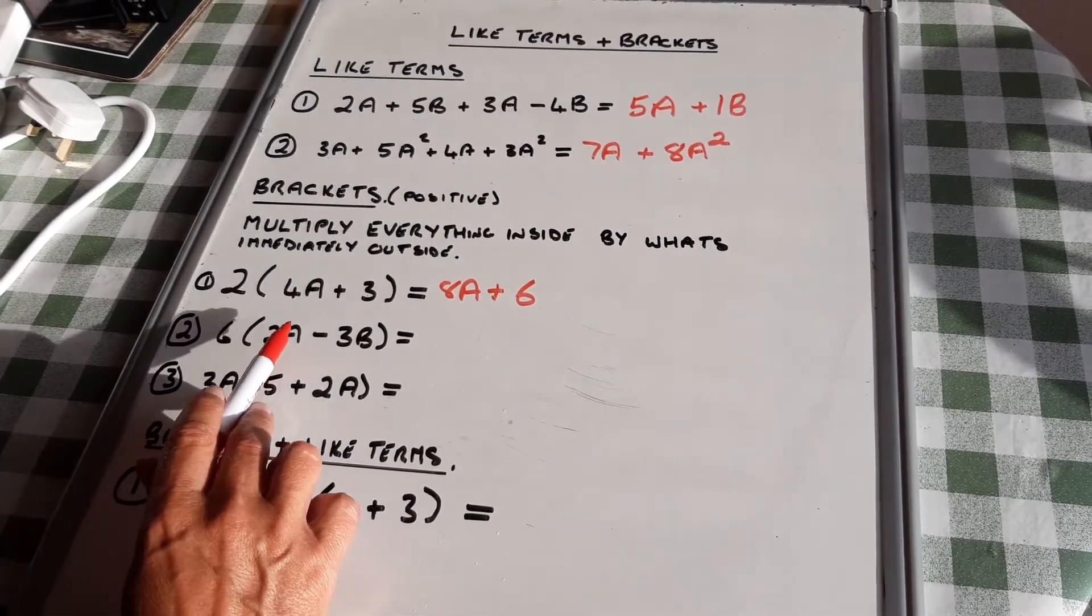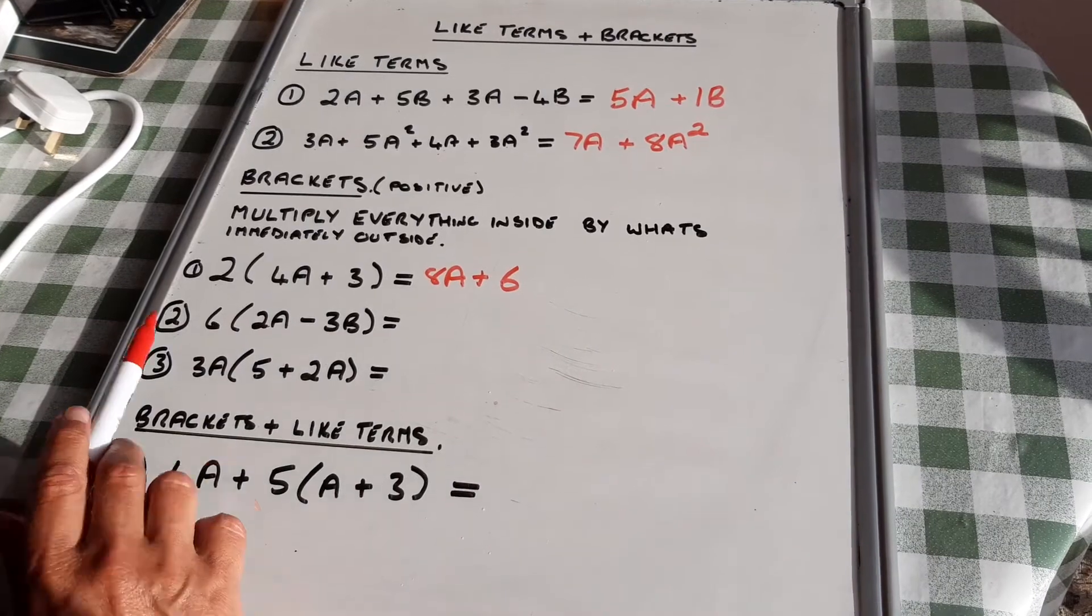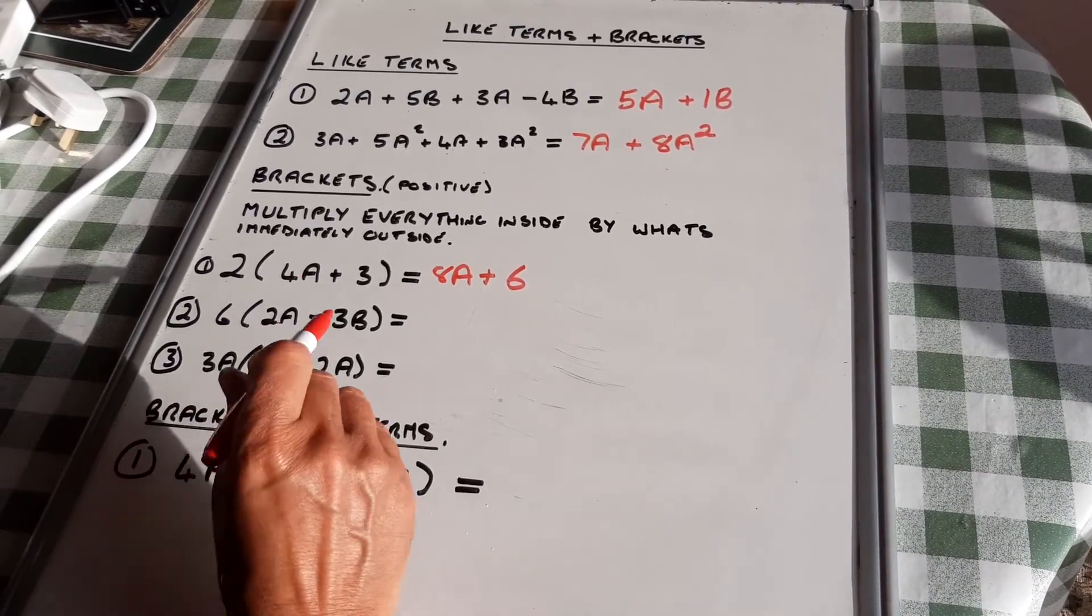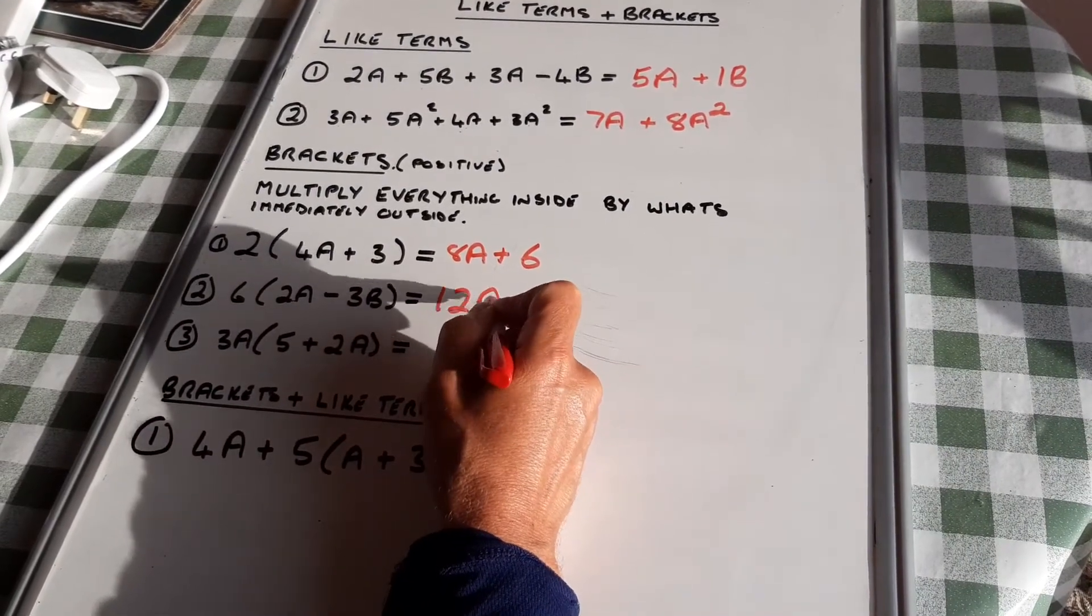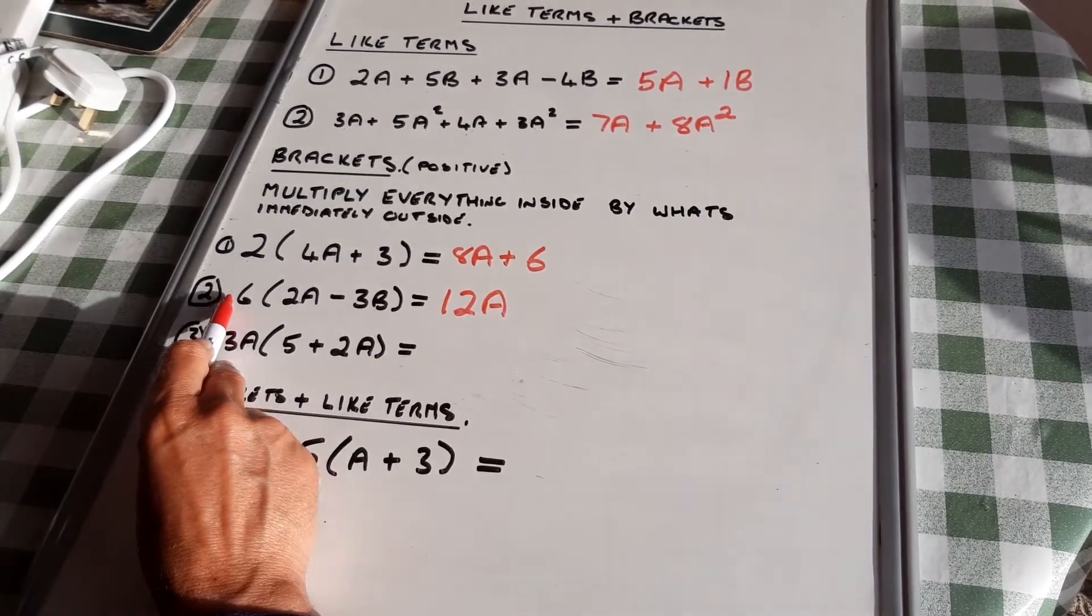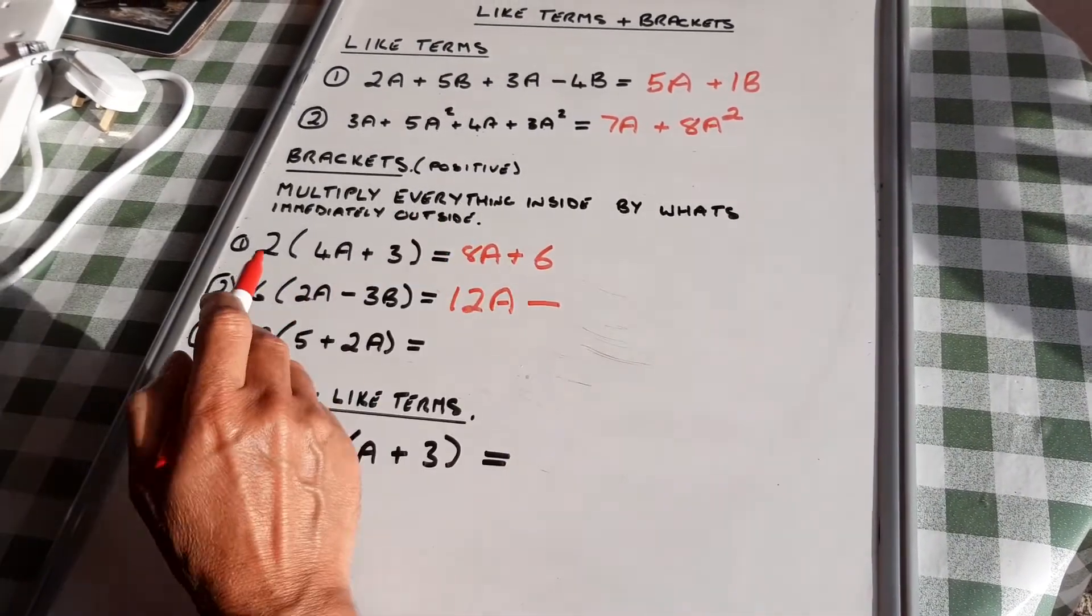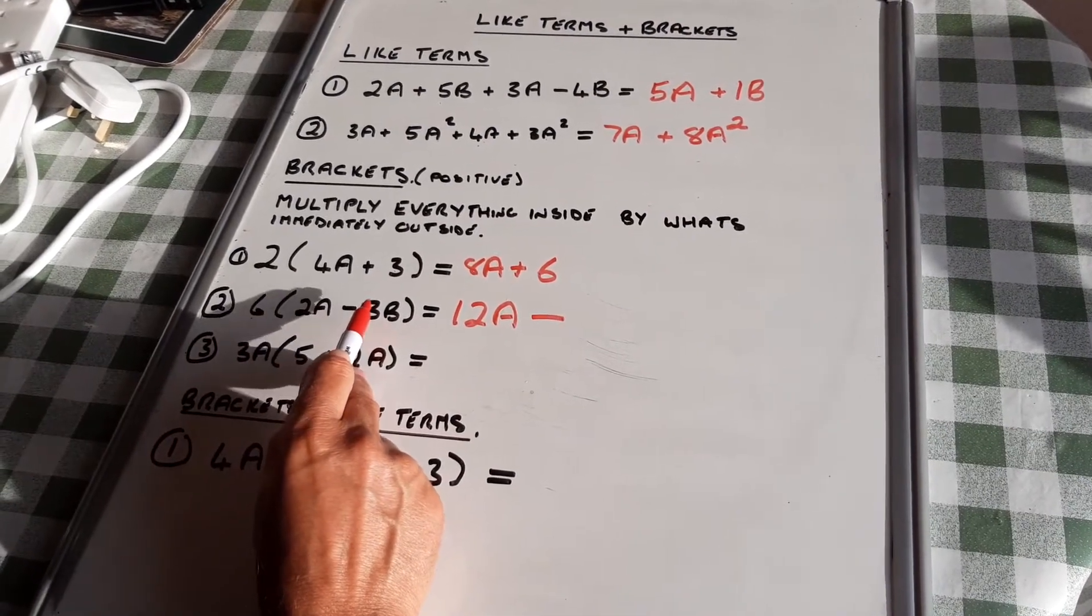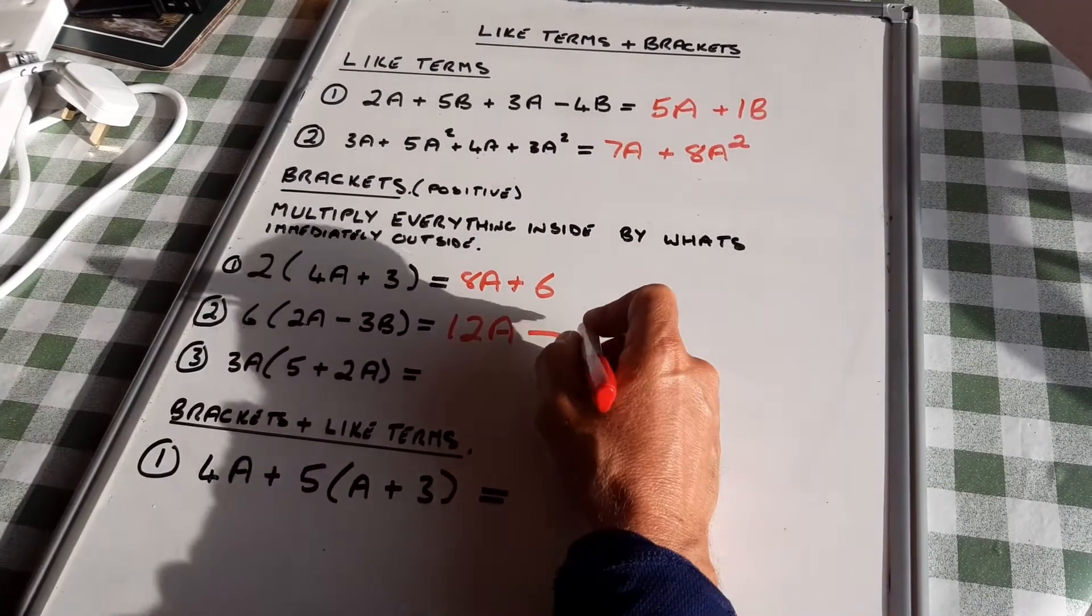So I need to now multiply both parts by 6. 6 lots of 2a is 12a. A plus times a minus is a minus. 6 lots of 3b is 18b.